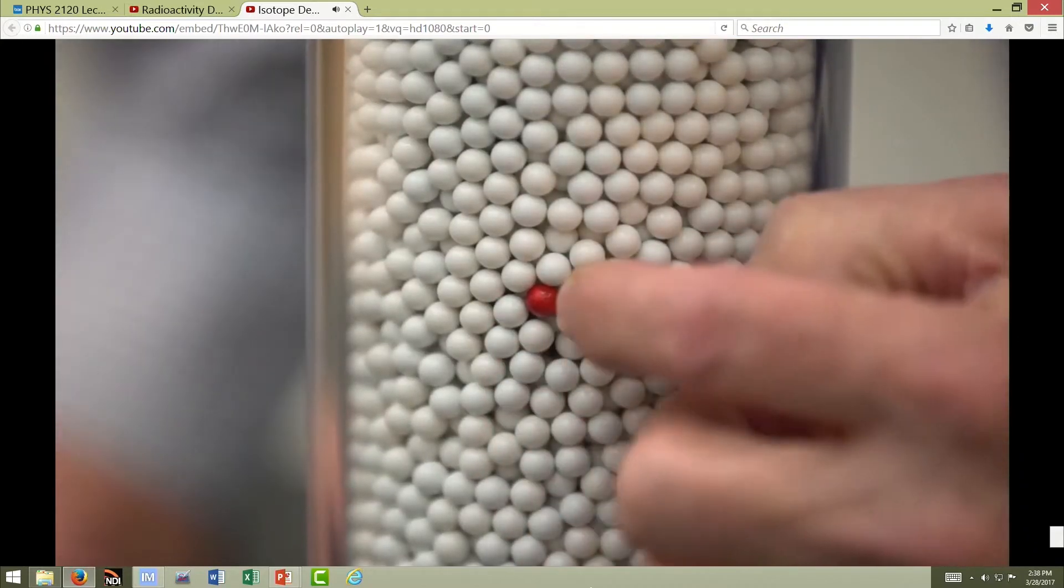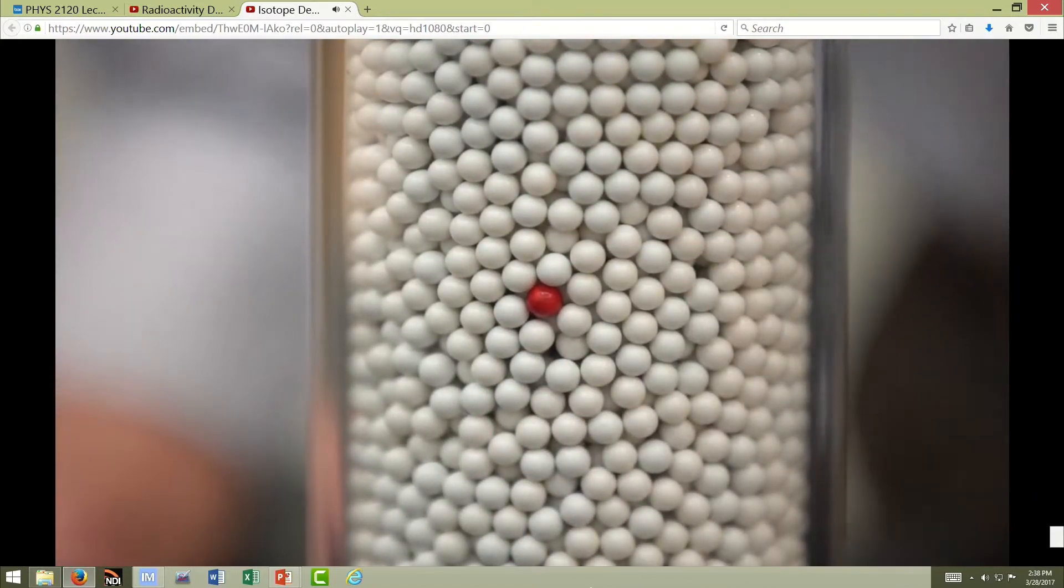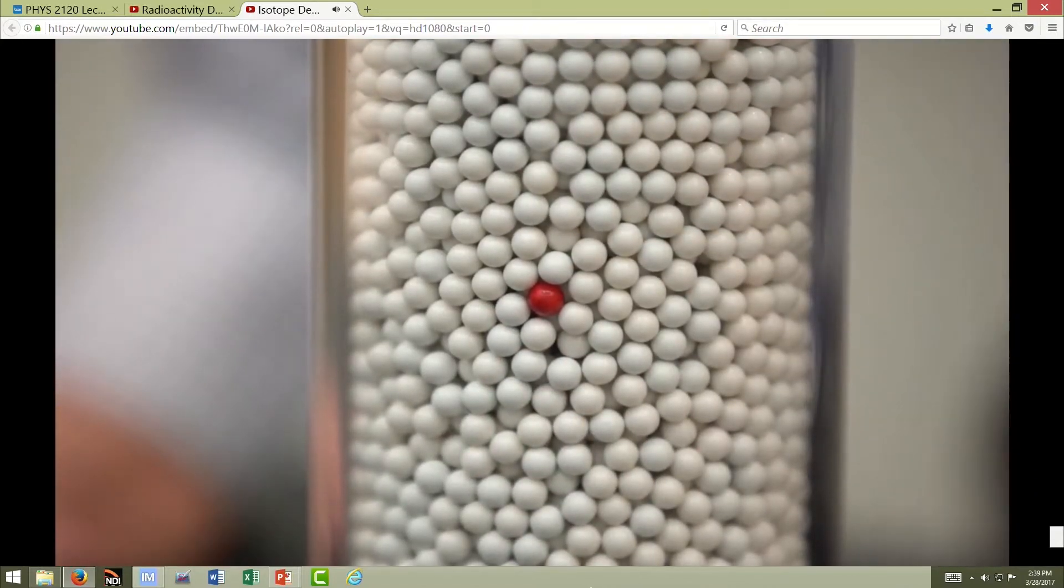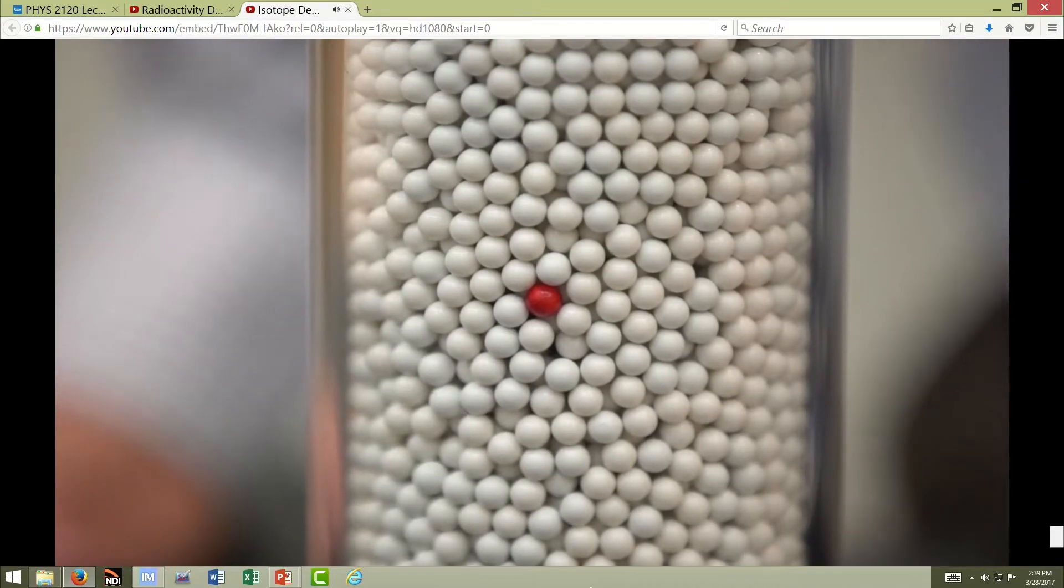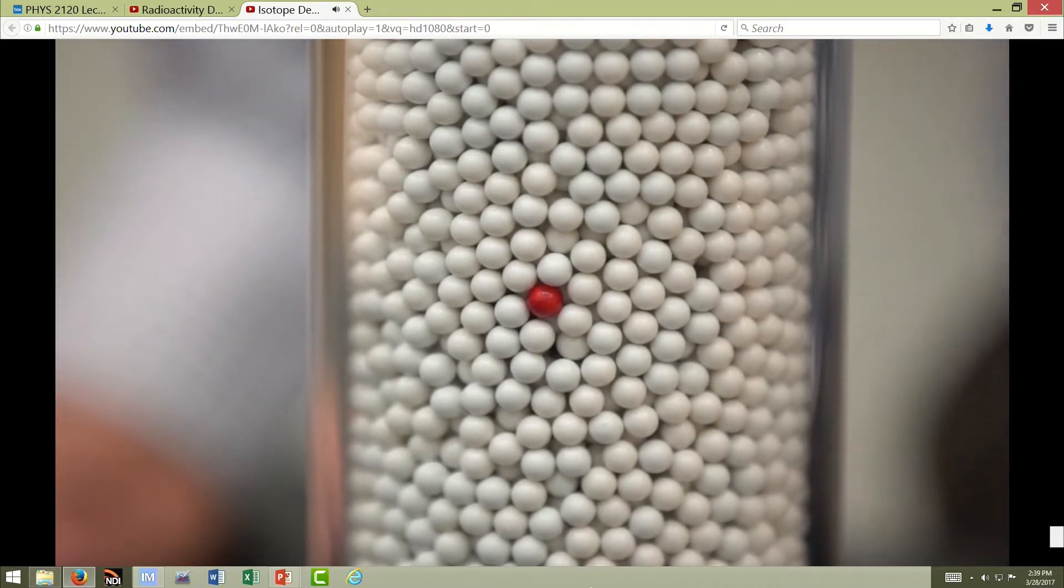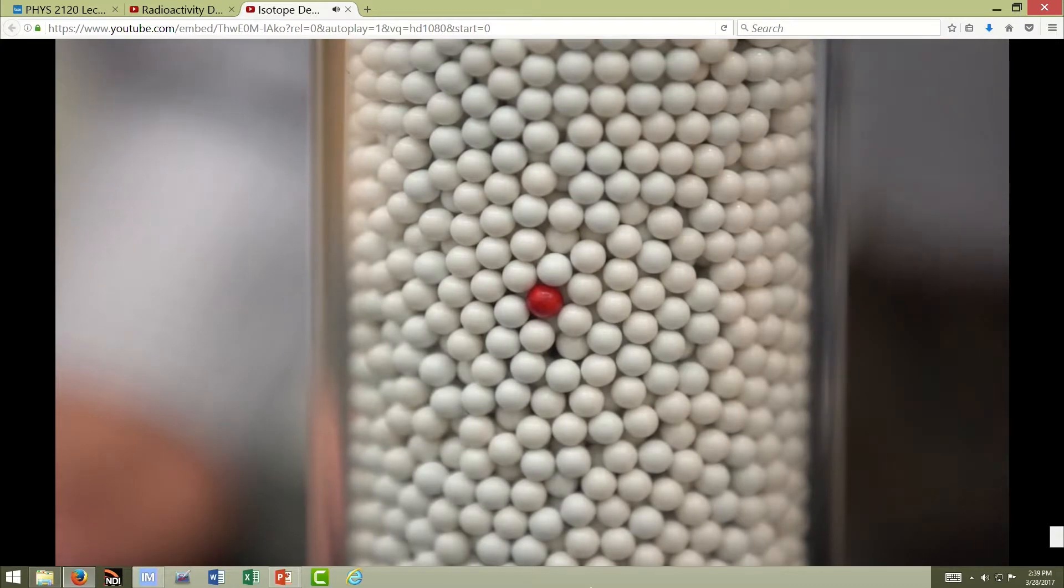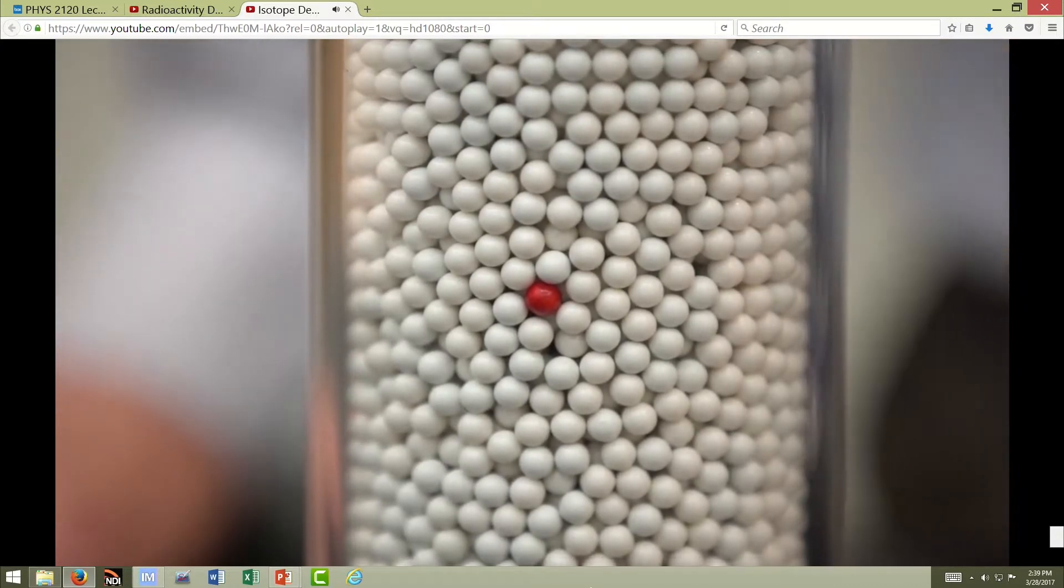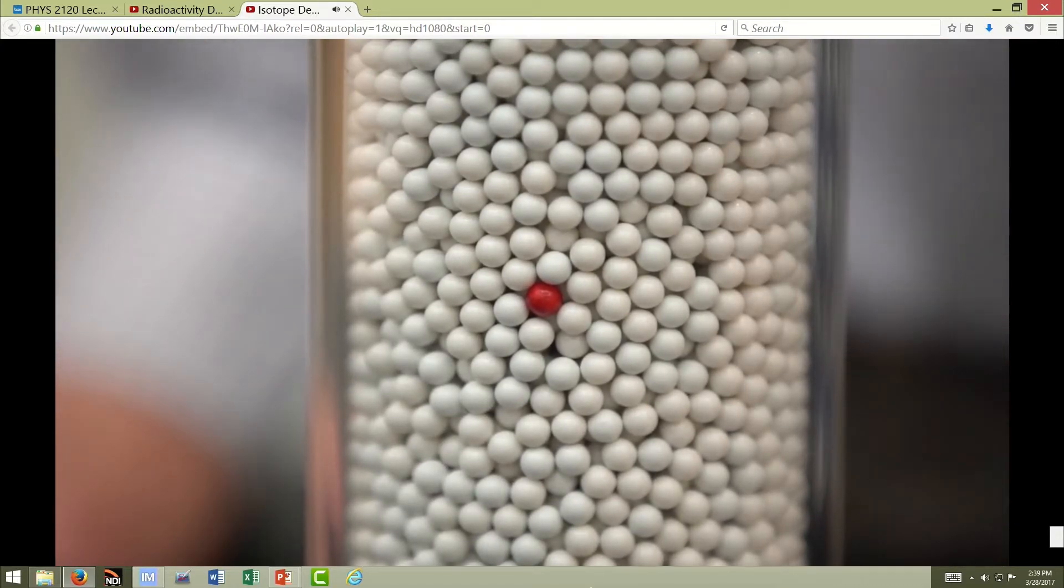And it's represented here by this red ball. Its abundance in nature is 0.012 percent. Very, very small percentage of potassium ions in nature are potassium-40.